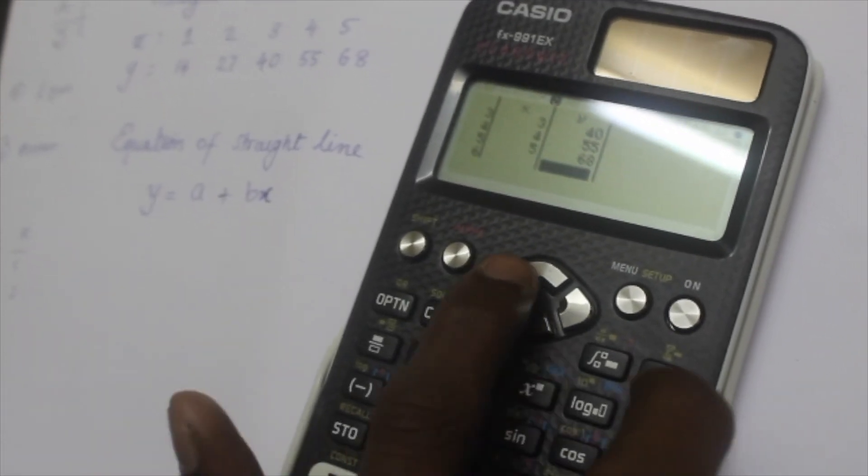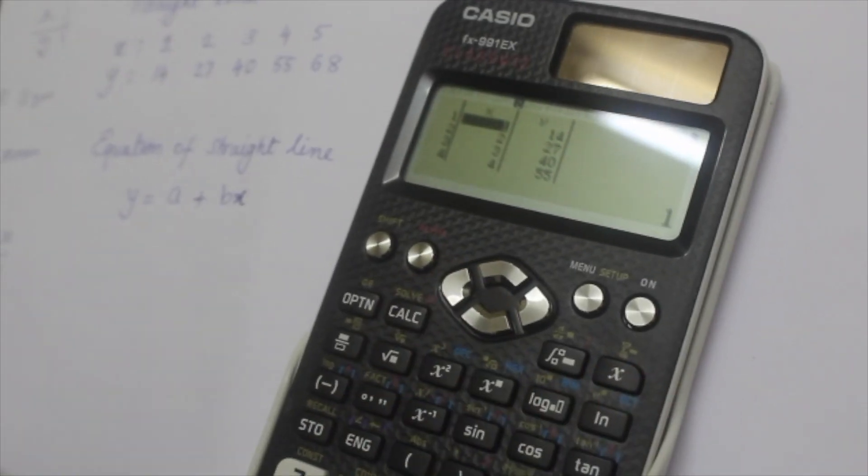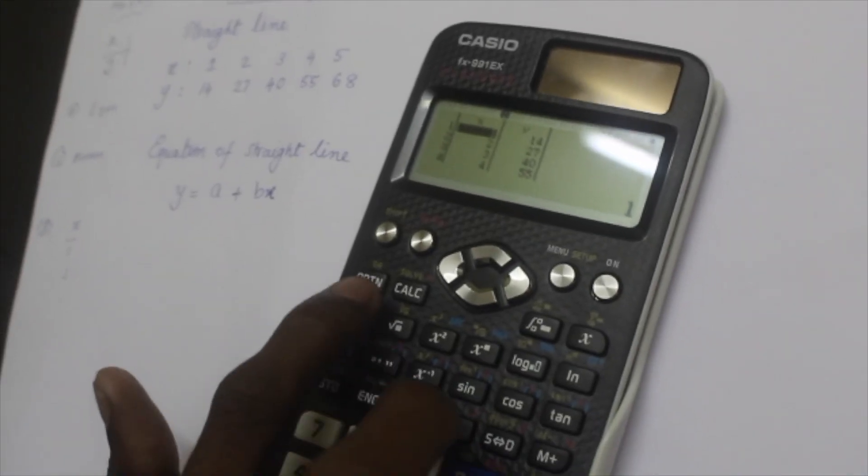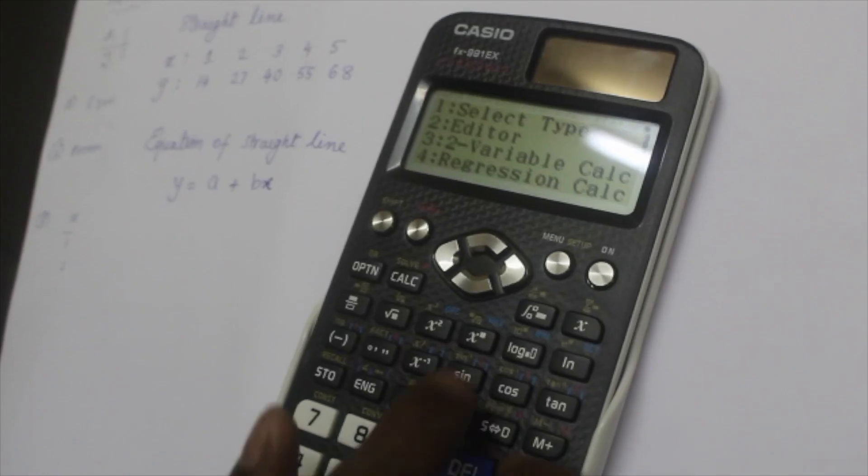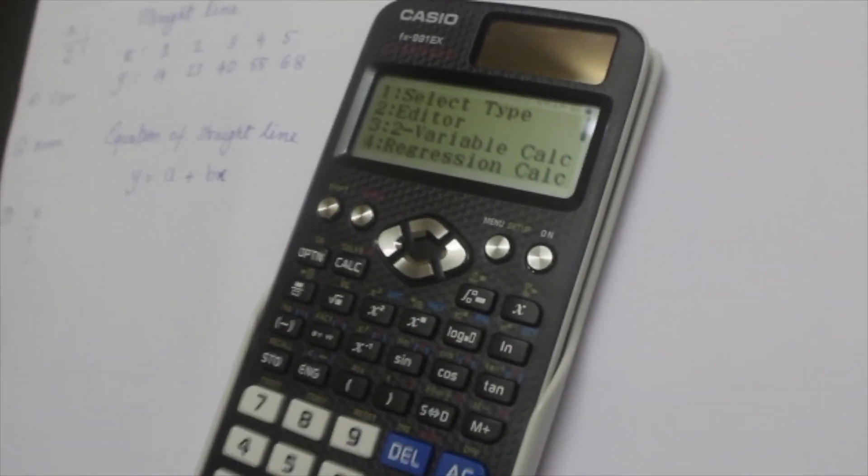We have input the values for x and y to calculate the equation of straight line. Press options. You can see four options and choose the fourth one, regression calculation.